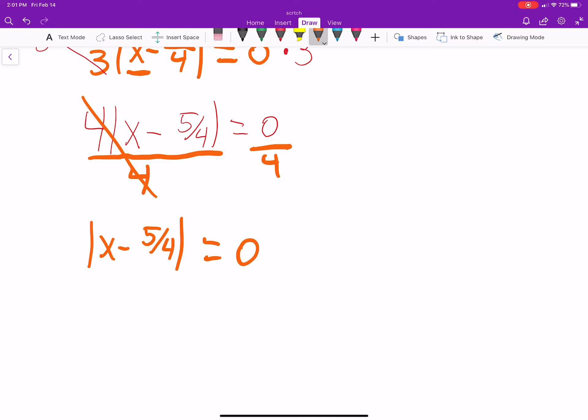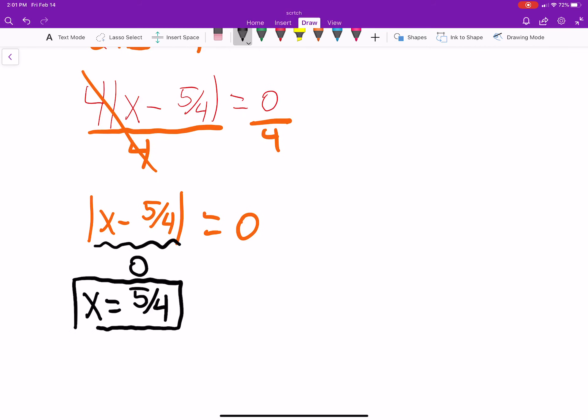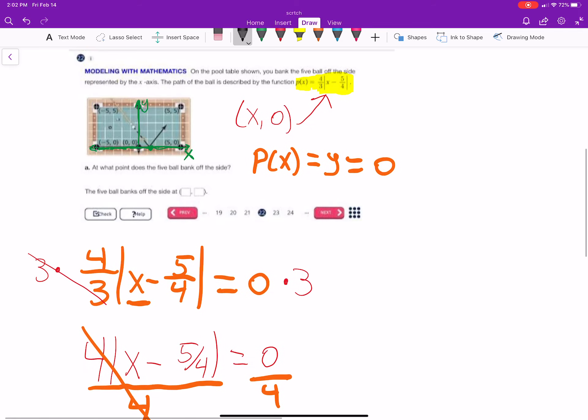The absolute value of some number minus 5-fourths is 0. Well, there's only one value, right? The absolute value of 0 is just 0. So, the only thing that will make this 0 is when x is 5-fourths. Because 5-fourths minus 5-fourths is 0, and the absolute value of 0 is 0. So, x equals 5-fourths is the only solution. If we put any other number, we wouldn't get 0. So, when x is 5-fourths, y is 0.